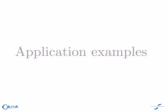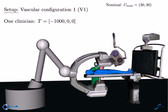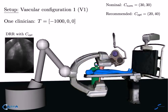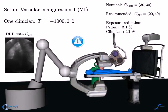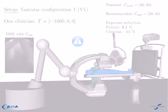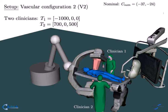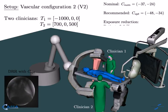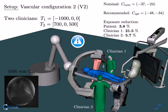We evaluate our approach in a virtual setup by simulating typical clinical imaging configurations. We show here two examples of different vascular projections where the achieved exposure reduction is displayed to the right and the simulated X-ray image with the suggested poses displayed on the left. With two clinicians in the scene, a reduction of up to 20% delivered dose can be achieved with the recommended pose.